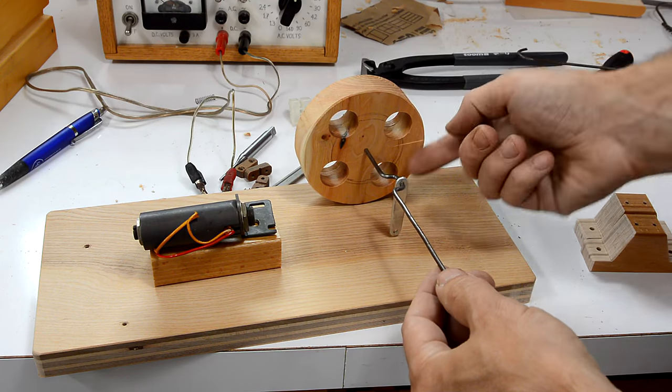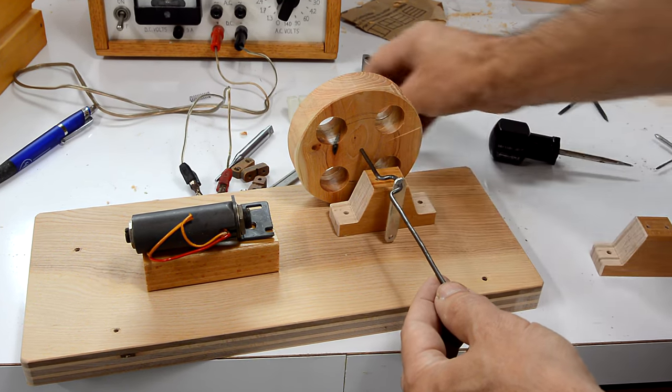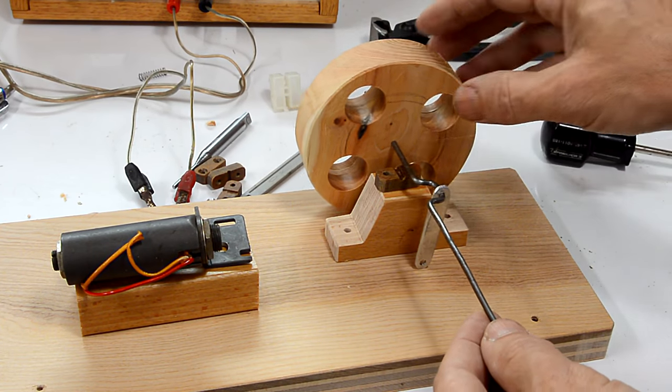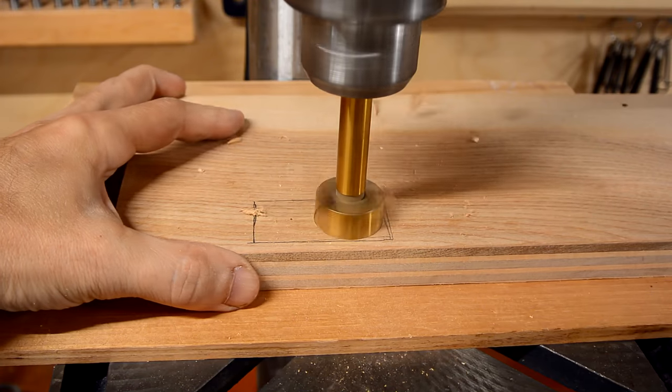Now, because of this flywheel, I need to mount this shaft a fair bit above the board. And I made these blocks to hold the bearing blocks. Except I made them too short, which means now I need to dig out a bit of a hole for the flywheel to dip into the base.